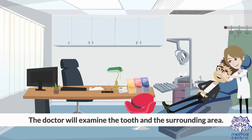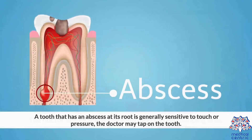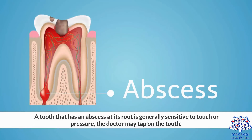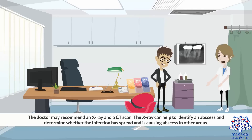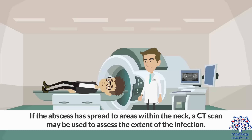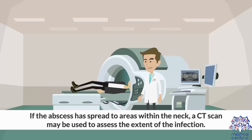Diagnosis. The doctor will examine the tooth and the surrounding area. A tooth that has an abscess at its root is generally sensitive to touch or pressure, and the doctor may tap on the tooth. The doctor may recommend an X-ray and a CT scan. The X-ray can help identify an abscess and determine whether the infection has spread and is causing abscess in other areas. If the abscess has spread to areas within the neck, a CT scan may be used to assess the extent of the infection.